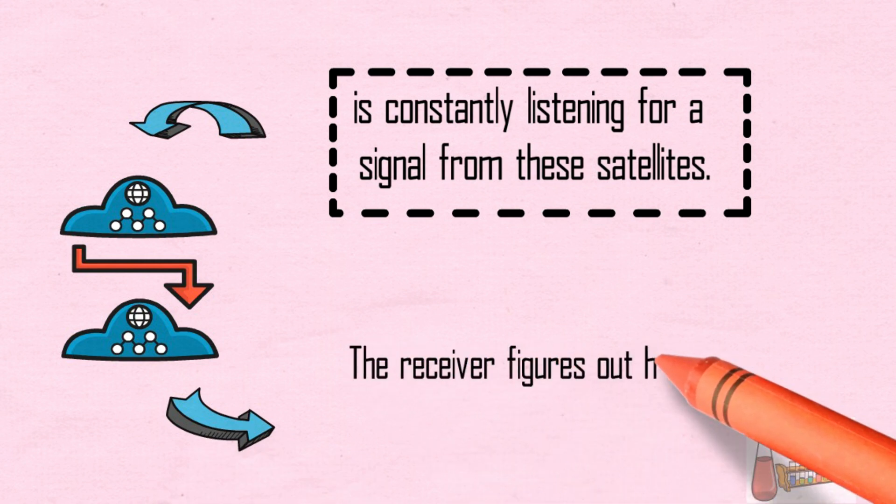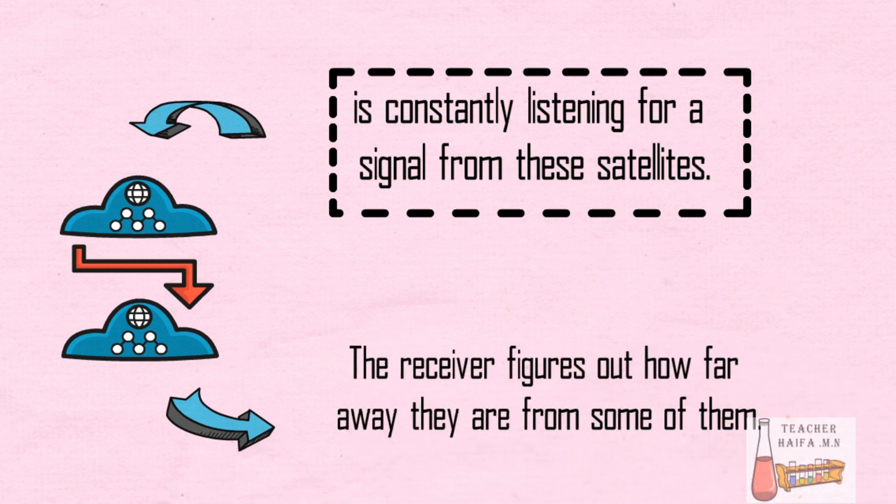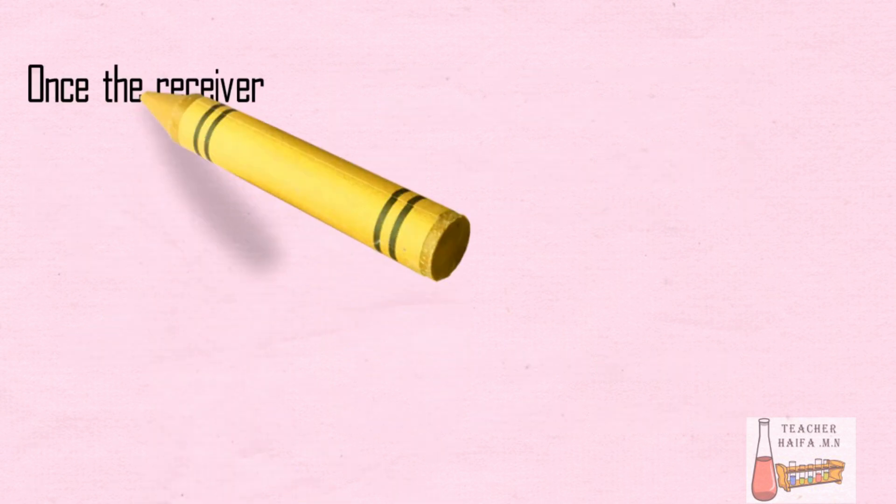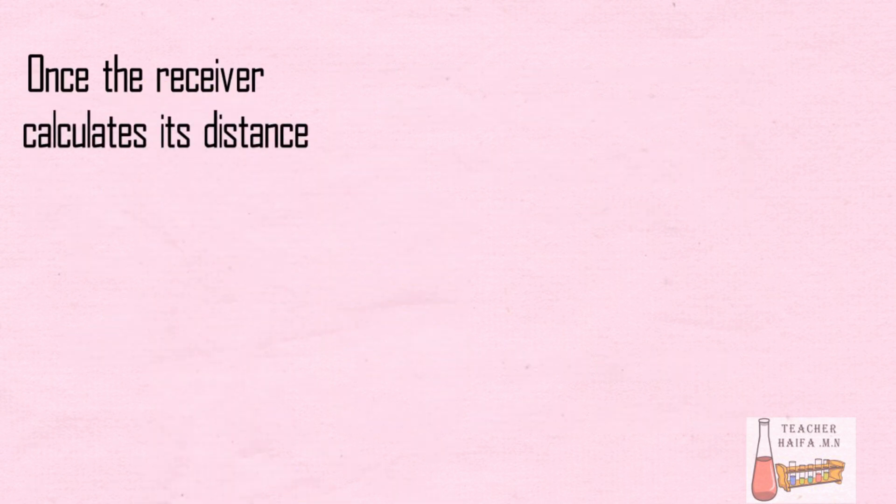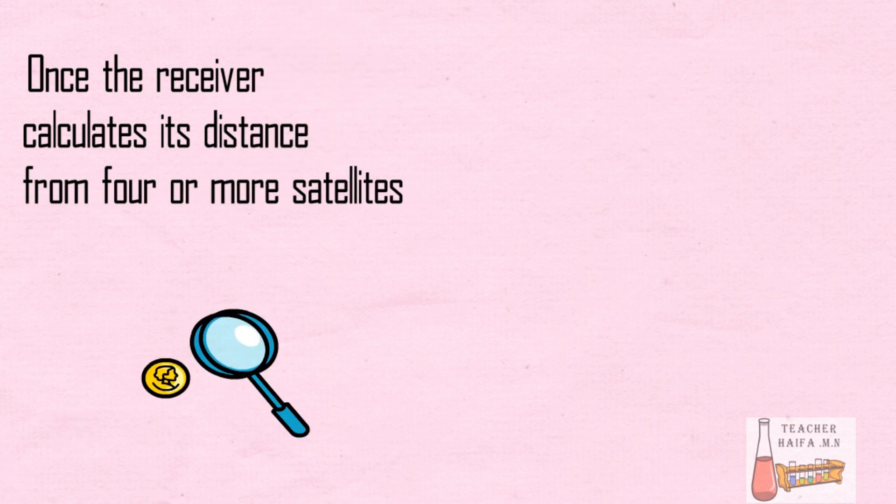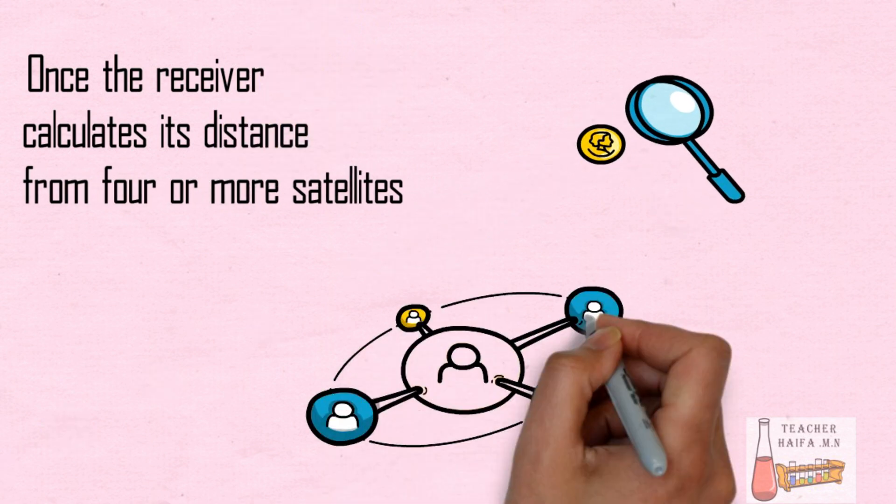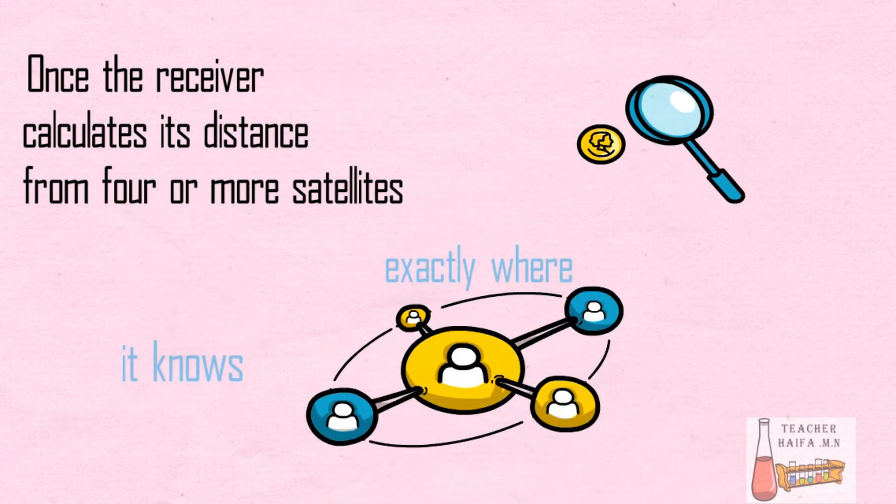The receiver figures out how far away they are from some of them. Once the receiver calculates its distance from four or more satellites, it knows exactly where you are.